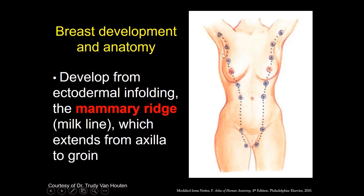However, it's important to be aware of this embryologic development because patients could have breast tissue or supernumerary nipples anywhere along this milk line. In fact, less than or about 5% of women actually have residual breast tissue up in the axilla, which we refer to as accessory breast tissue. This becomes important clinically because some of those patients will present with symptoms related to that tissue itself.